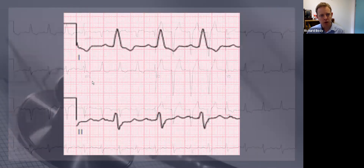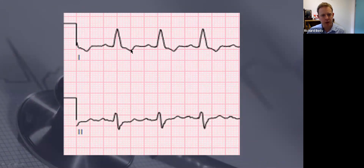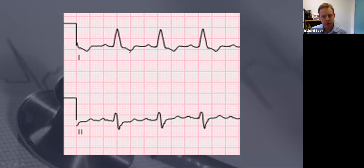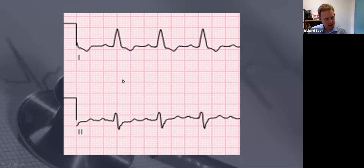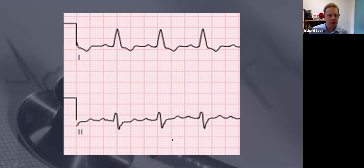Have a look at the axis. For the axis we need to look at leads 1 and 2. We'll see they're going upright in lead 1, which is what we're supposed to see - so that's normal. But if you look at lead 2, the S wave is deeper than the R wave, so it goes more down than up. That means it's an abnormal axis - left axis deviation.